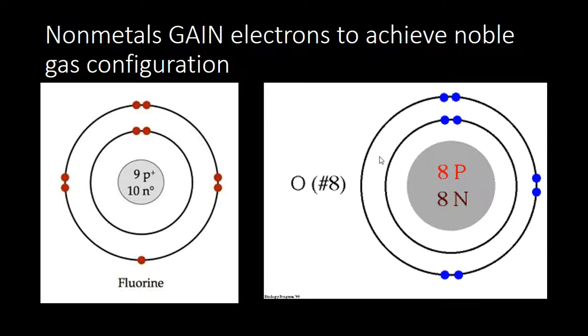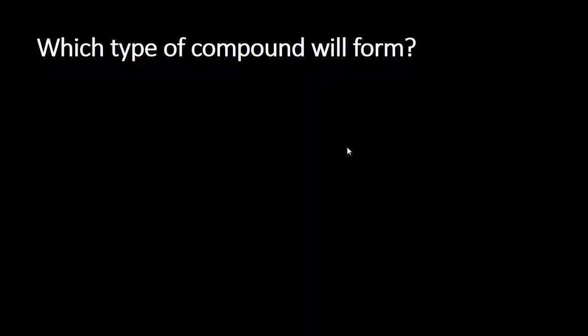Non-metals will gain electrons also to achieve this noble gas configuration. So fluorine has seven valence electrons. When it picks up one from a metal or something, it will then have eight. And that's what it's trying to do. Oxygen has six valence electrons. It needs two more. So it'll bond or it'll ionically or covalently do what it needs to do to get those two electrons to have a complete outer shell.